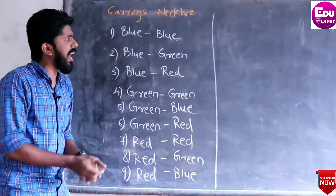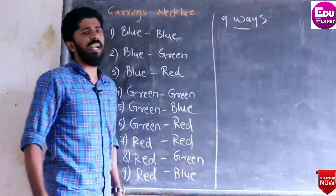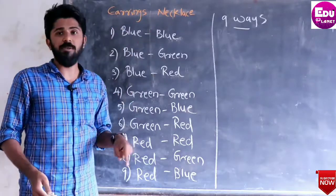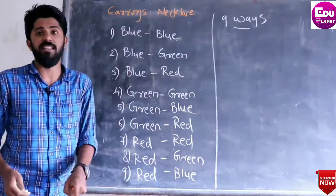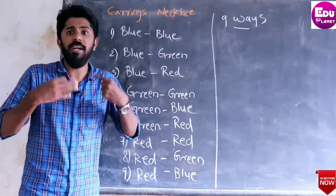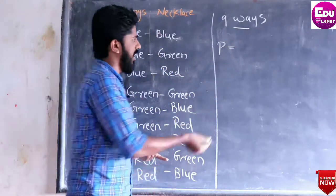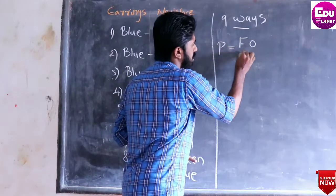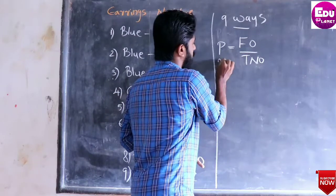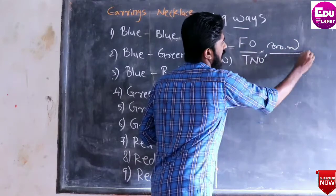Total nine ways. Nine ways for earring total probability — nine ways, two questions, one way. Probability: favorable total number of outcomes. Probability is sathya divided by sathya.